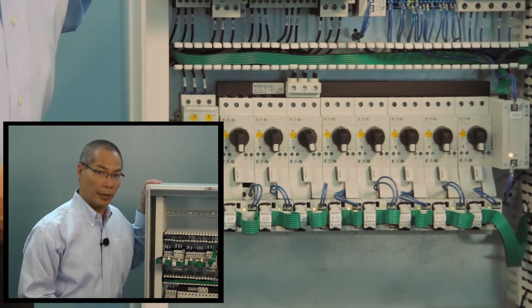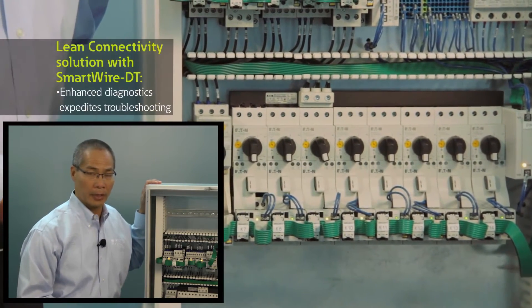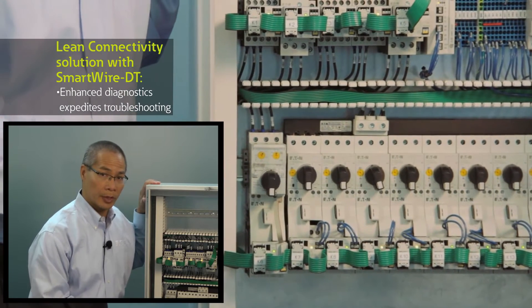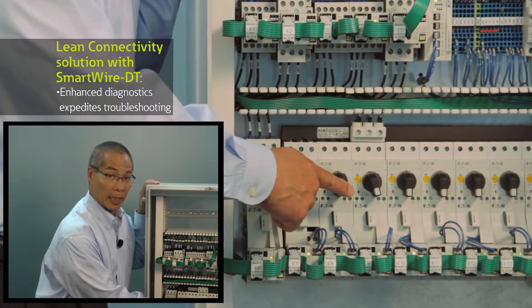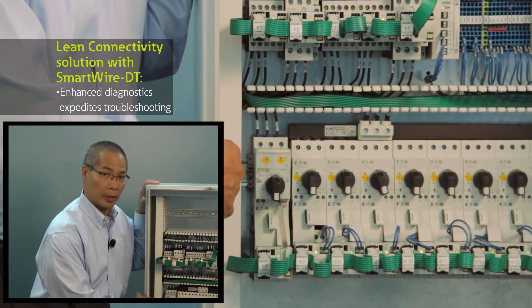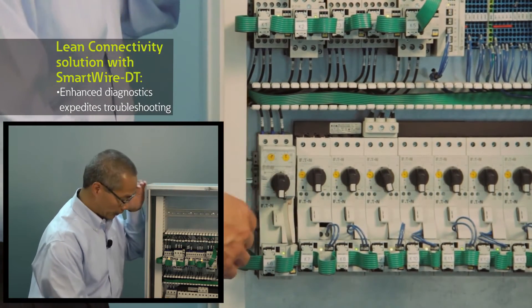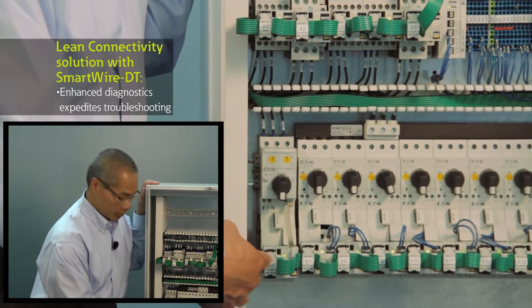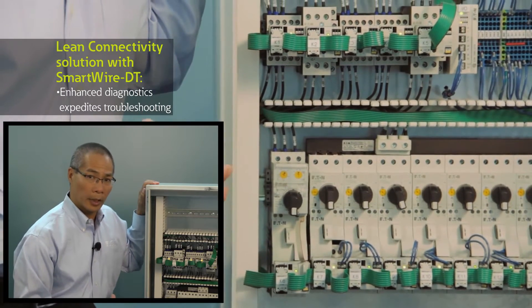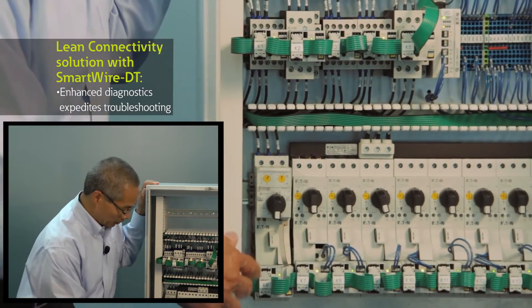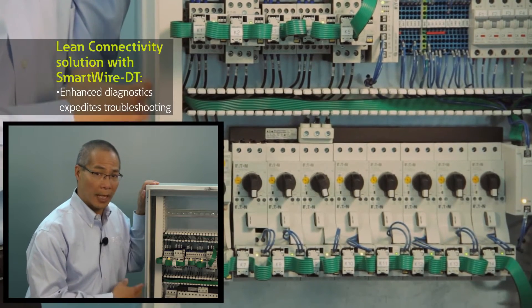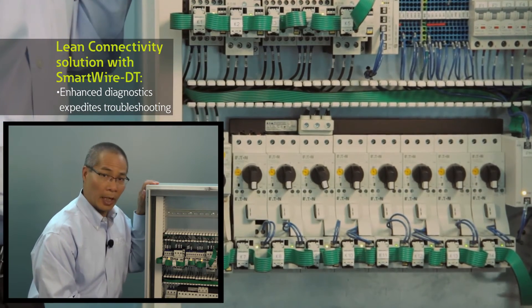With SmartWire DT, I can do a number of things, and one of those is to get diagnostic information over the network. If you'll notice, I have two types of manual motor protector units inside this cabinet. One is our standard electromechanical manual motor protector unit, and on the left-hand side here, you'll see an electronic manual motor protector unit with an interchangeable trip unit. With SmartWire DT, I can actually tap into the electronics on that unit, and I'm able to monitor the motor current that's coming out of this motor connection. I can also monitor the status of the MMP and its trip condition.